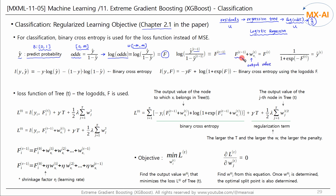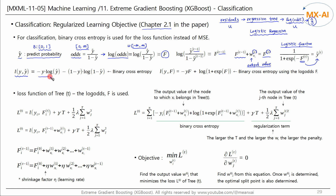If you add the output value w of iteration round t to the f of round t-1, you get f of round t, and we can use the logistic function to convert the log odds f into the probability y-hat. Regression uses the mean squared error for the loss function, while classification uses the binary cross-entropy. The binary cross-entropy can be expressed using the log odds f as follows.